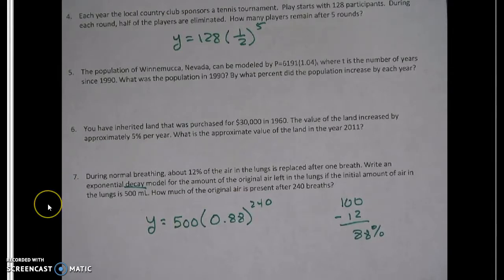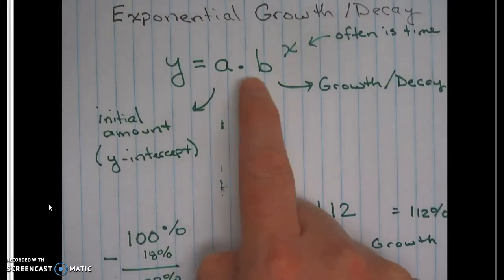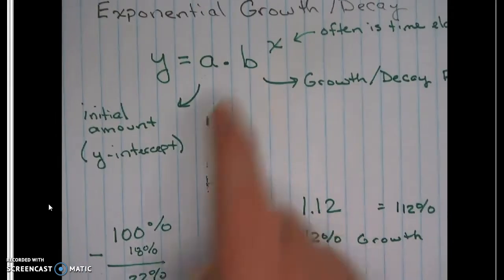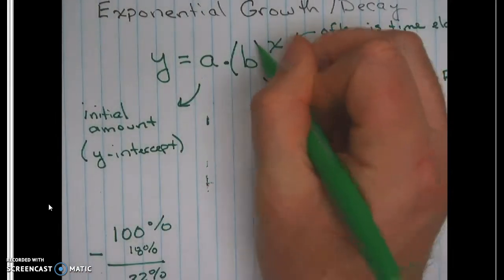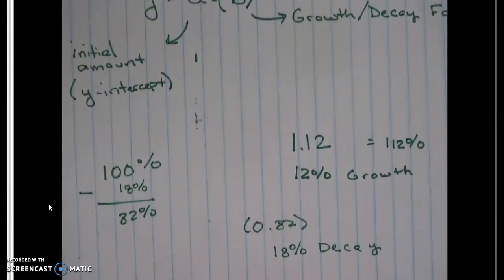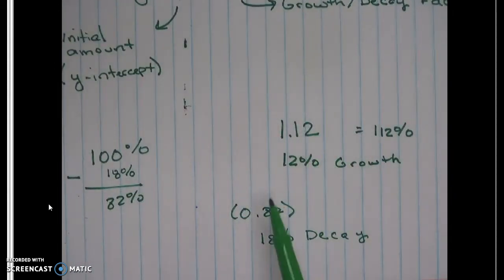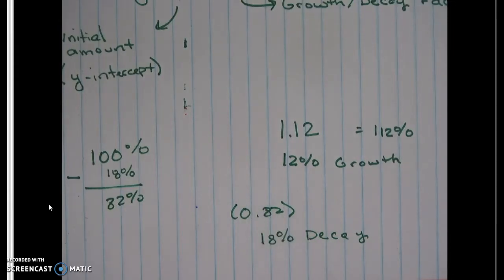Remember the big ideas: the first number is the starting amount; the number in parentheses is the B term, the growth factor. If that number is above 1, it's growth. If that number is smaller than 1, it's decay. That's the key concept of exponential growth and decay. If you have questions, come see me.